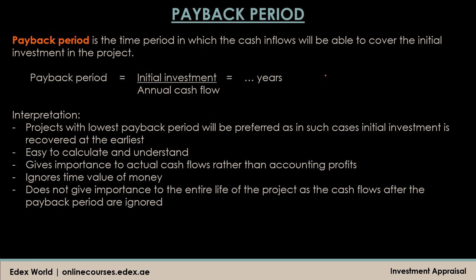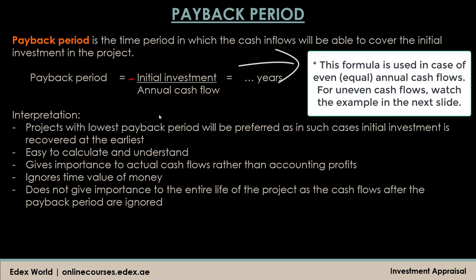The second method is the payback period — the time period in which cash inflows are sufficient to cover the initial investment. For example, if you invest $100,000 and recover that amount in three years, your payback period is three years. Whatever is received after that is additional cash flow. The formula is: initial investment divided by annual cash flow, expressed in number of years.